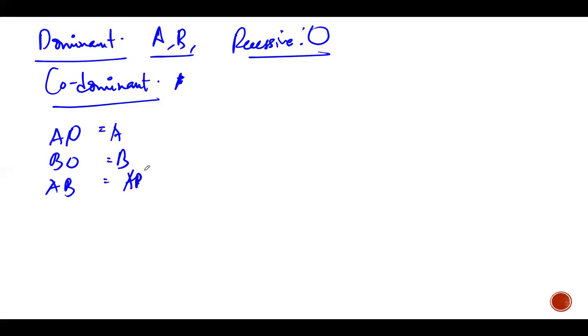It'll be AB because A and B are both dominant, or in this case we can say they are co-dominant. So they are dominant over O, but amongst themselves they are co-dominant, meaning both are dominant. Is this clear? Yes, sir.